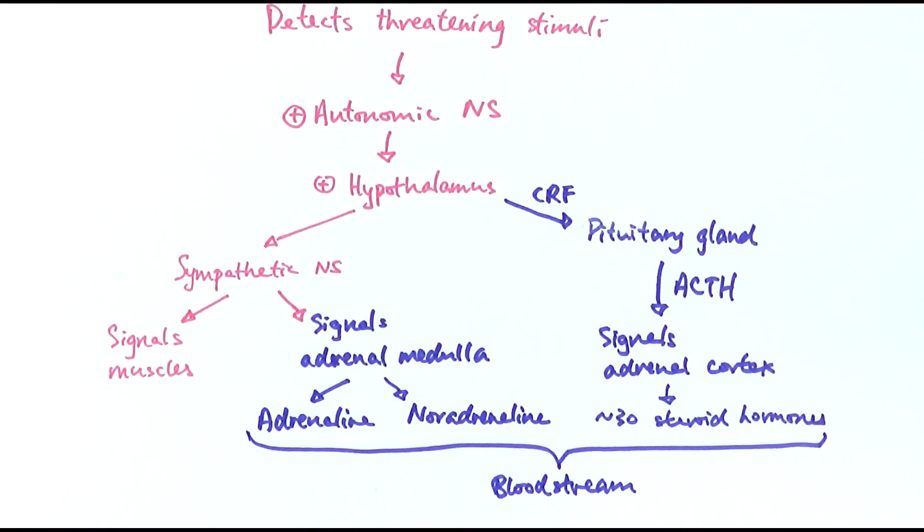To summarize, this is the coordinated response showing how the nervous and endocrine system could coordinate a fight-or-flight response. First of all, the nervous system would detect the threatening stimuli and they would signal the autonomic nervous system, which is responsible for the automatic or subconscious actions.